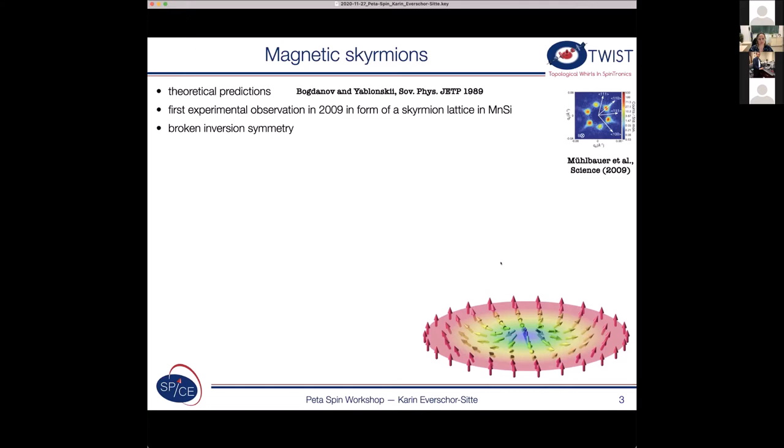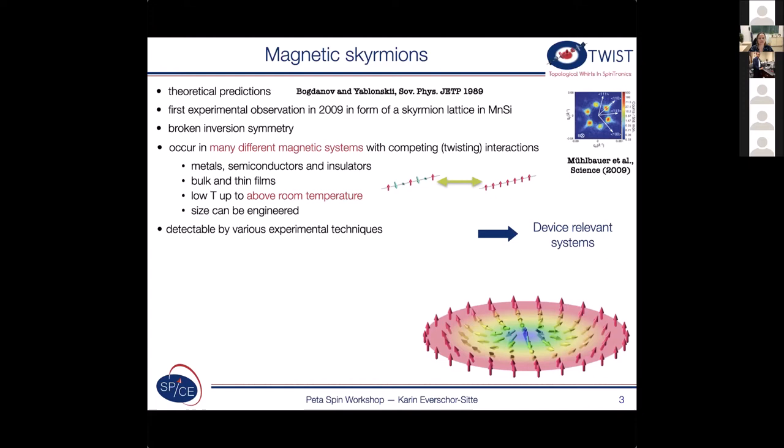By now they occur in many different magnetic systems which have competing interactions. This you can understand just when looking at the structure because if you go around the circumference here then you want to have some interaction scale that is ferromagnetic or just favors an alignment but if you cross such a texture then you want to have a tilted structure. So therefore they can occur in different systems: metals, semiconductors, insulators, bulk and thin films.